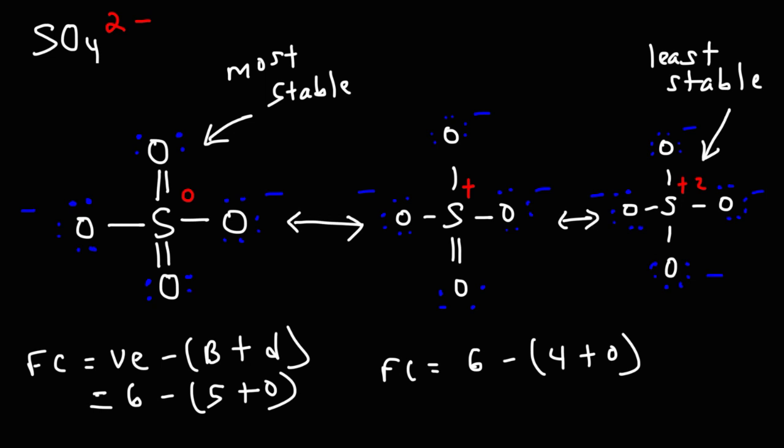As you can see, it has a lot of charges. So now you know how to draw the Lewis structure of sulfate, and you also know how to identify the most stable resonance form of this particular polyatomic ion. Thanks for watching.